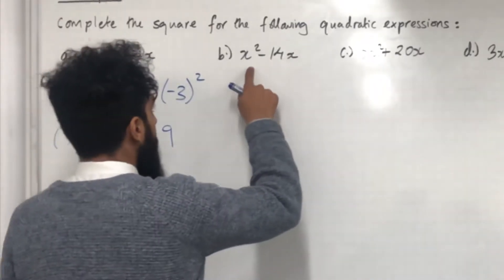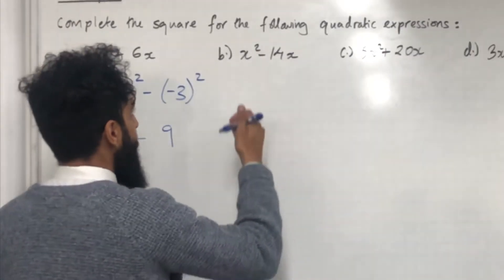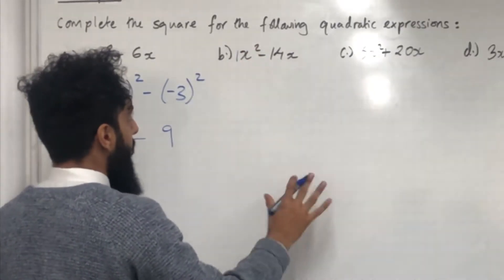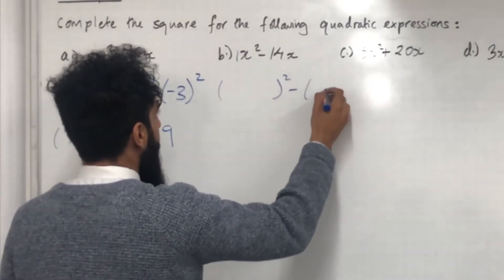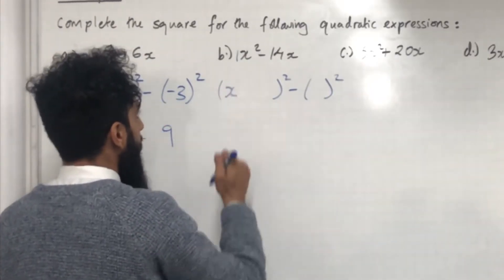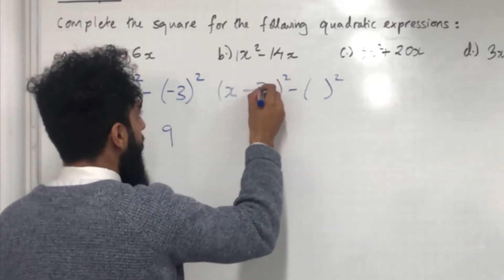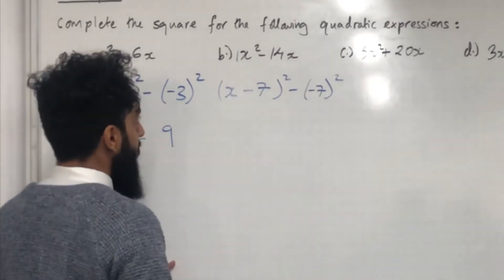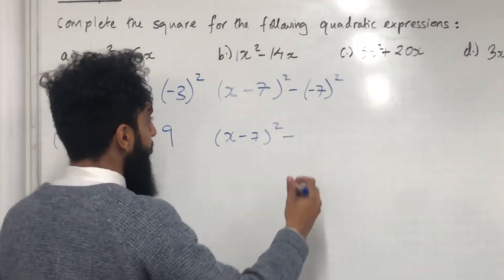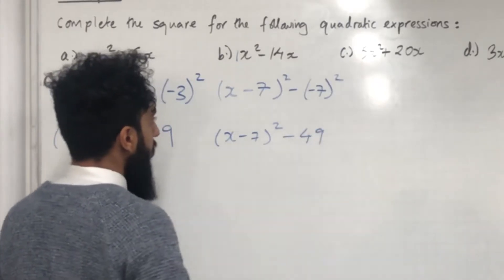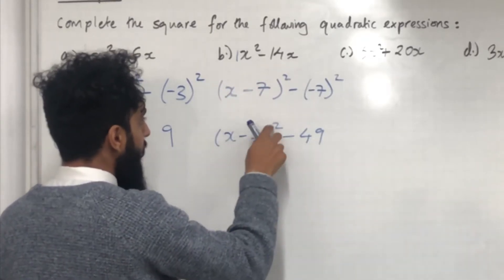Moving on to Part B. The first step is to check the coefficient of x squared — in this case it is 1 — so we proceed forward and complete the square. We put bracket squared, minus bracket squared, stick in x, and take the coefficient of x which is minus 14 and half it, giving minus 7. So we put minus 7 in both places. Cleaning up: (x − 7)² minus 7 squared which is 49. So completing the square on x squared minus 14x gives (x − 7)² − 49.